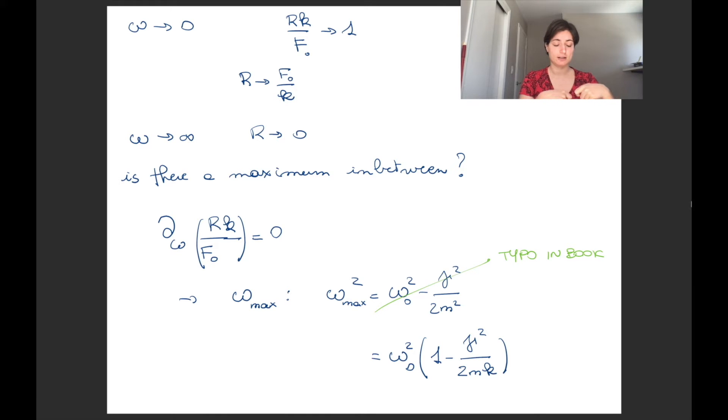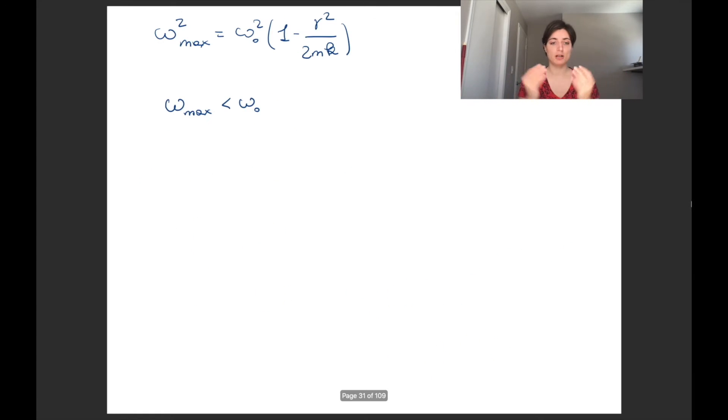If we solve for omega, that gives us an omega_max. In the book there is a typo and in the slides there is a page of calculations to show you how the typo happens and why I'm sure that the other formula is actually correct. We have that omega_max^2 is equal to omega_naught^2 times this coefficient (1 - gamma^2/2mk). What does omega_max mean? It means that if the forcing term has the frequency omega_max, then the amplitude of the response is maximum.